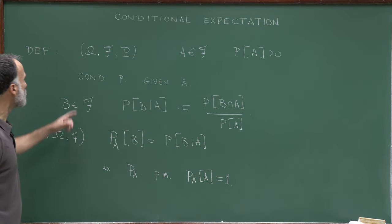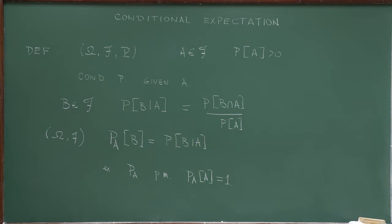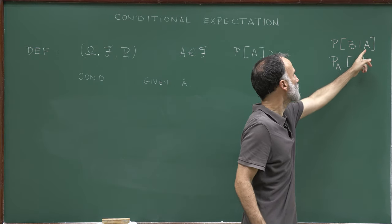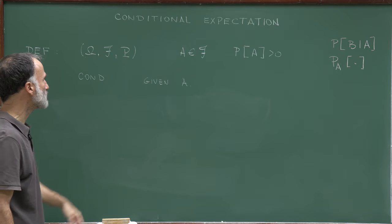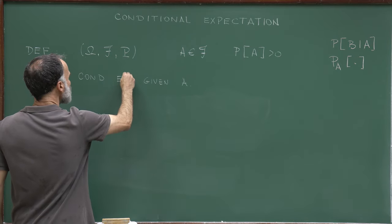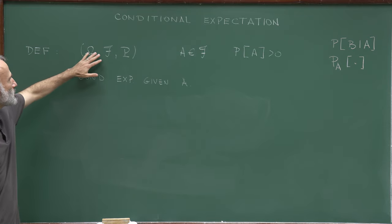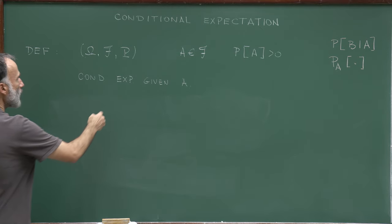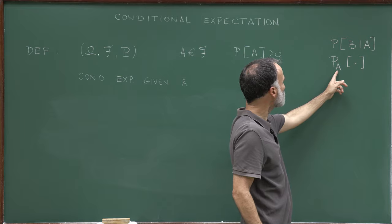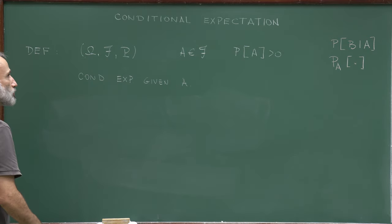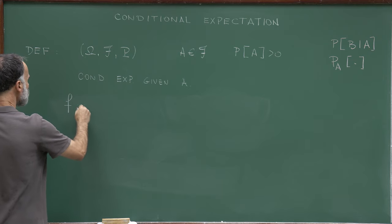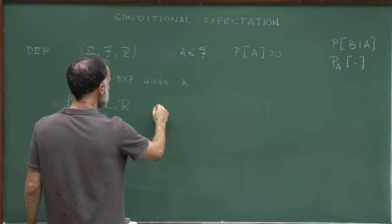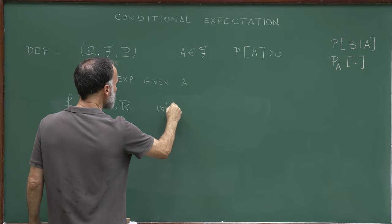So this is the definition of Conditional Probability. Now I want to define the Conditional Expectation. We will always be working with this probability space. Once you have defined the probability, you can define the expectation associated to that probability. Let me take a function F defined on omega taking values in R.